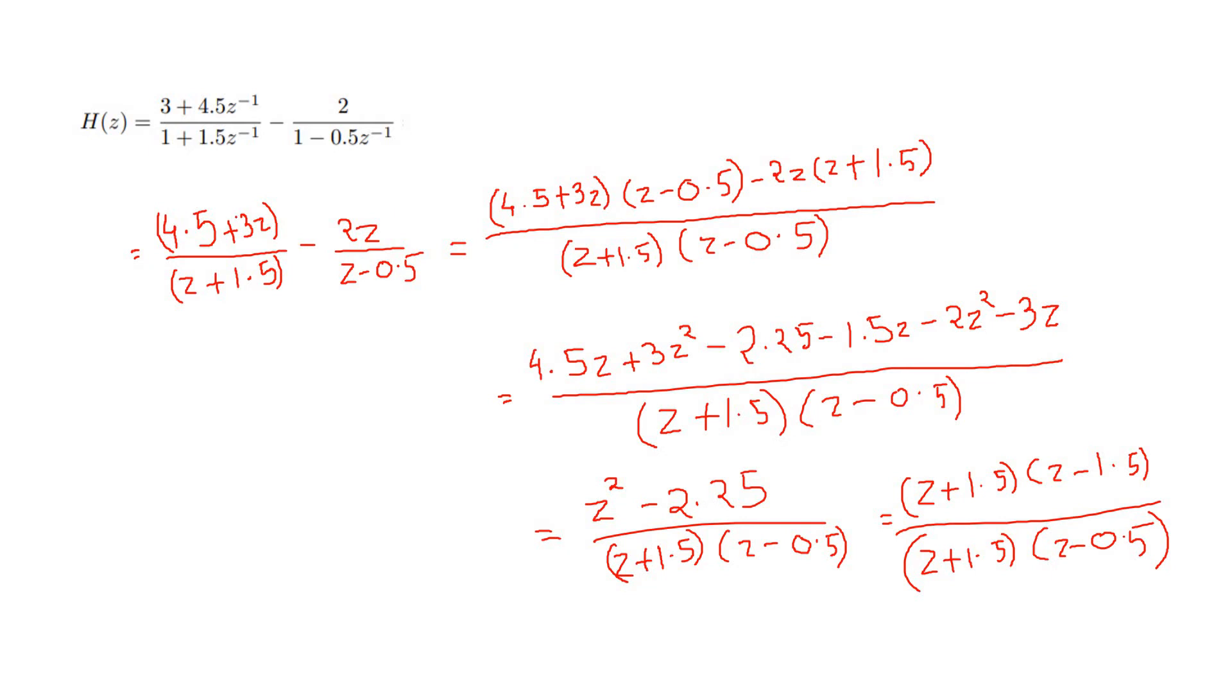Now if we simplify this particular transfer function, we will get—see, lots of simplifications, just simple steps if you follow—you will get this particular function: (z + 1.5)(z - 1.5) in the numerator and in the denominator (z + 1.5)(z - 0.5).